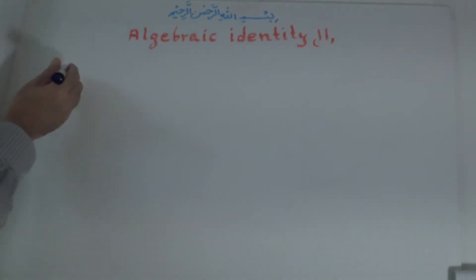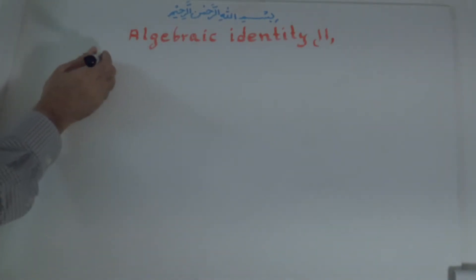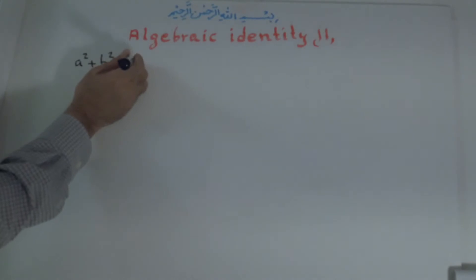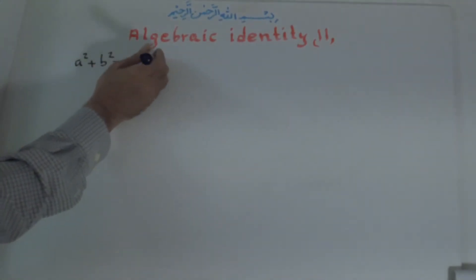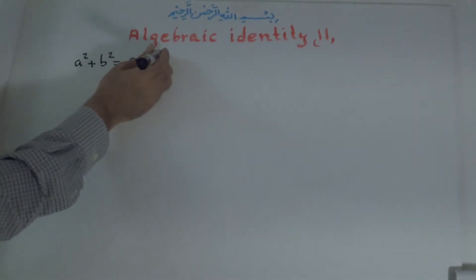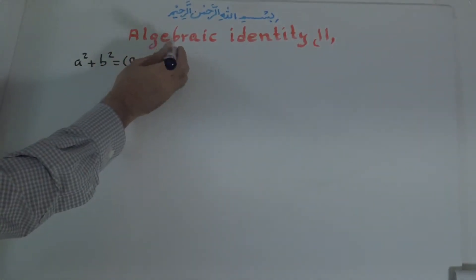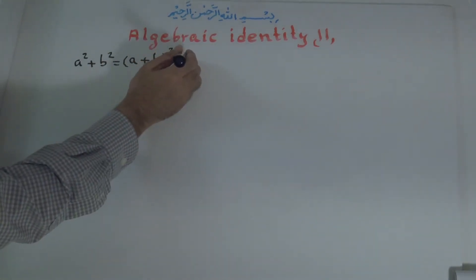We have a to the power of 2 plus b to the power of 2 is equal to a plus b all to the power of 2 — that is identity number 1 — minus 2ab.